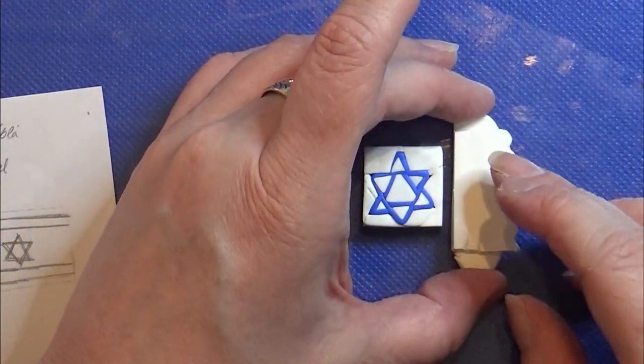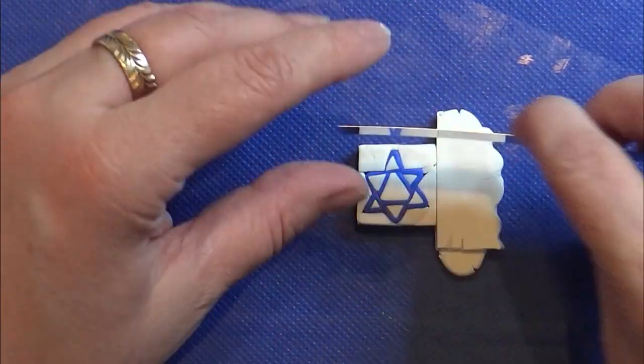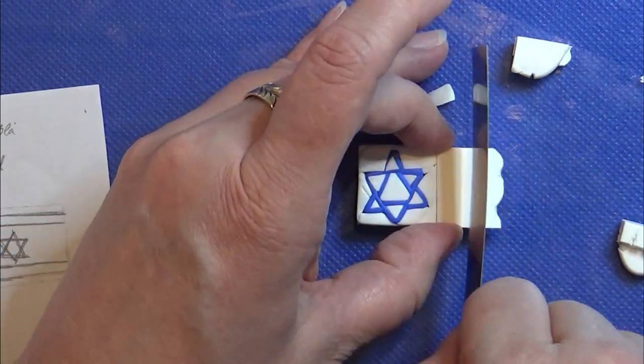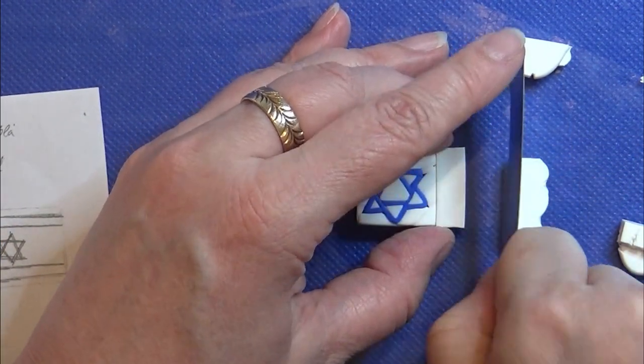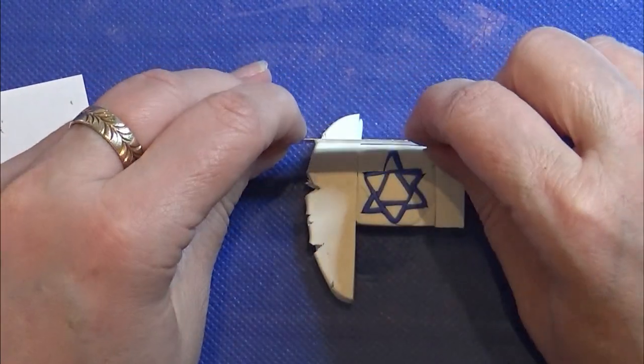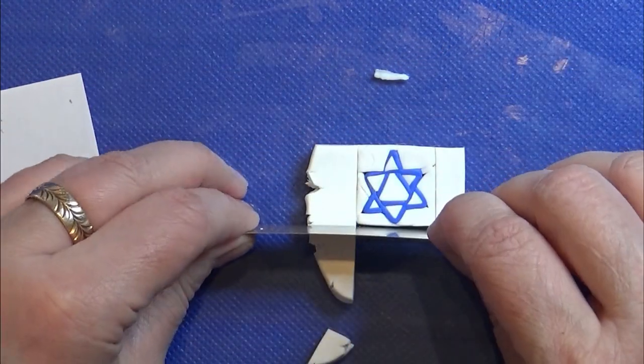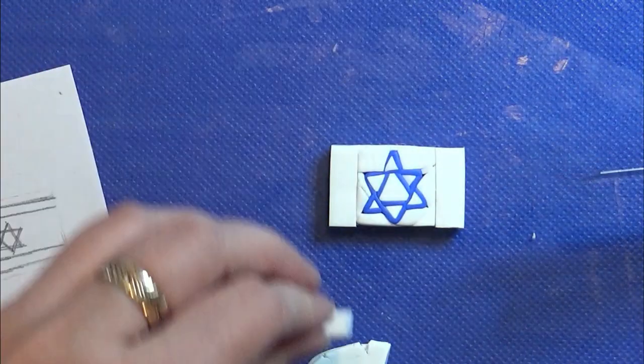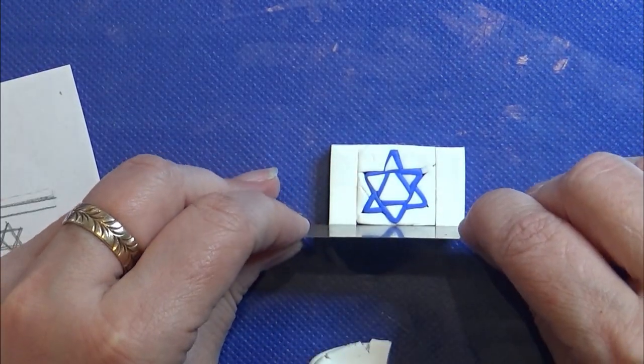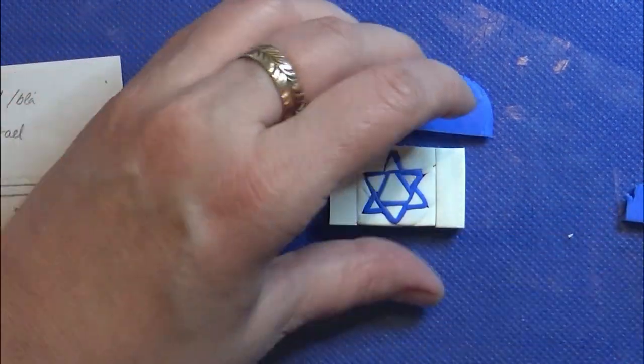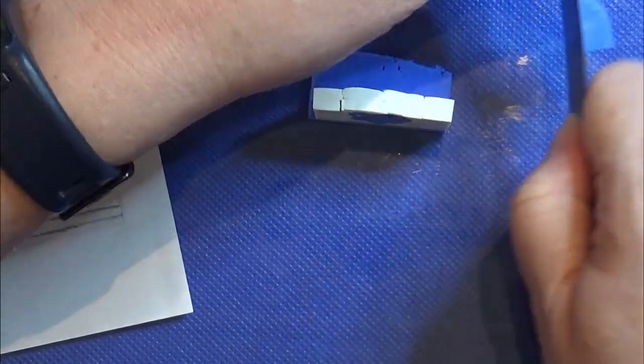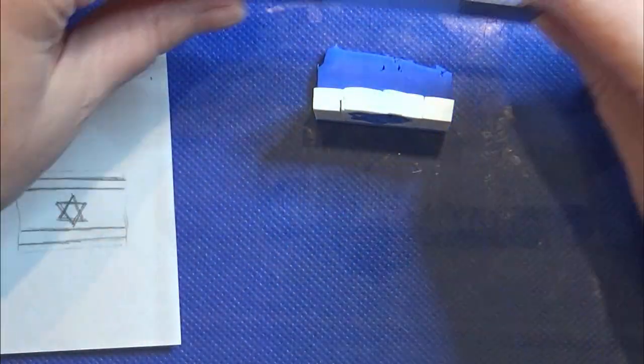I'm putting a little more white in each end of the flag to make it more flag shaped. I rolled out the blue on a setting one on the pasta machine and I'm putting a layer of that on top and bottom of the flag.